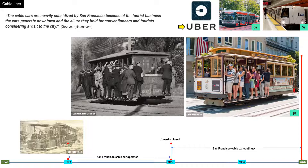The subsidy provided to the cable car makes economic sense. It generates indirect income to the city that is many times more than the subsidy provided by the city government. 25 million tourists visit San Francisco yearly, pumping $10 billion into its local economy. The cable car is one of its top tourist attractions and among the most unique tourist attractions in the world.